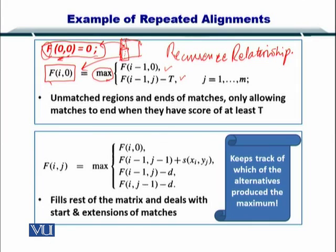Just to remind you: in case of global alignment, we initialize the first column by minus i multiplied by the gap penalty. In case of local alignments, we initialize the first column by zeros. But in this case, for the repeated sequence alignment, we are initializing the first column by taking the maximum value from amongst these two which we will compute. There is a special variable t here.